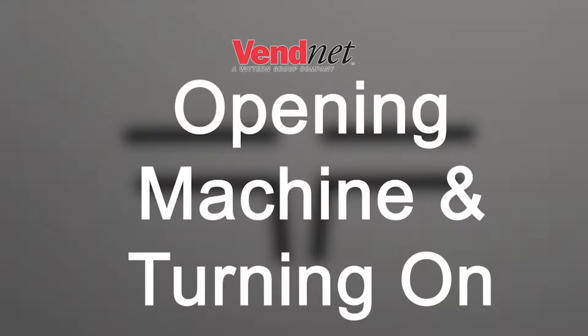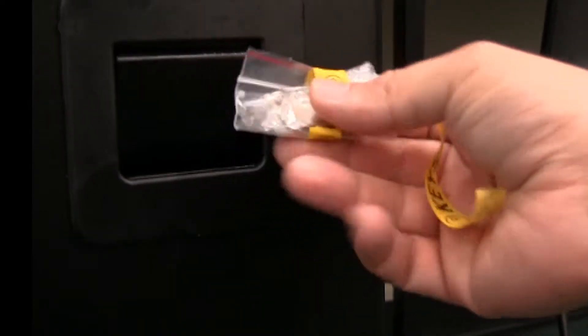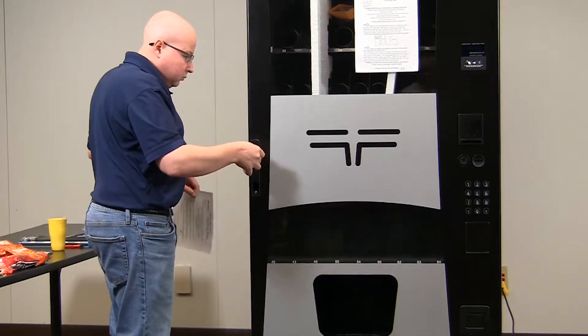Now it's time to turn the machine on. You'll find the keys located in the coin return cup on the lower part of the door. Remove the keys and open the door.